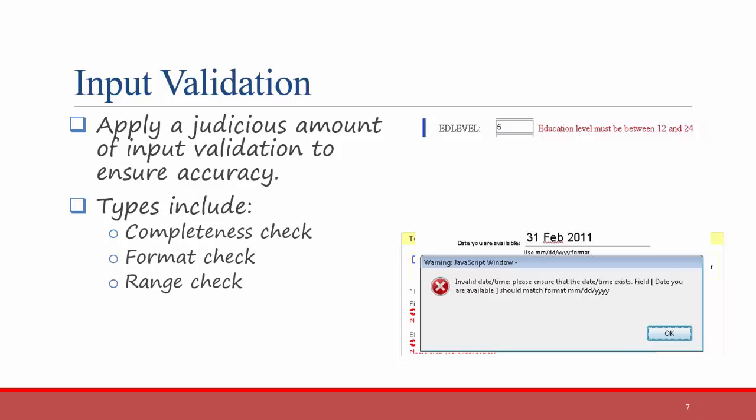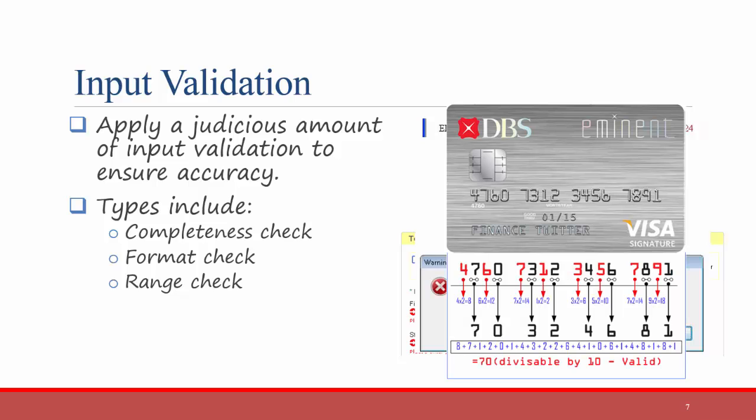A range check, for example, ensures a number must be between a minimum and a maximum amount. There is also a check-digit check, which can be used for certain numbers like credit card numbers and social security numbers. Credit card numbers are actually built on very complicated mathematical formulas. For example, with VISA numbers, if you take the odd-position digits of the credit card number and multiply them by 2, then add those together along with the even-position digits, you get a total number. If that total number is divisible by 10, the system can tell that it is a valid VISA credit card number.